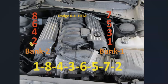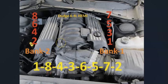Bank one side of the engine is going to be on the right side, and bank two is going to be on the left side. If you ever need to know what side of the engine is bank one or bank two, just find the number one cylinder on that engine — that's going to be bank one, and the opposite of that would be bank two.